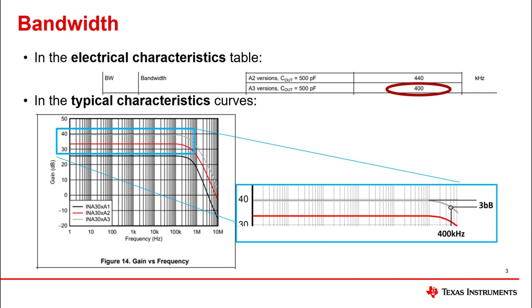Bandwidth is limited to small signal, meaning that the output is not slew limited. This is typically when an output moves less than 100 mV. As this amplitude grows, the signal could get distorted due to slew rate limitations.